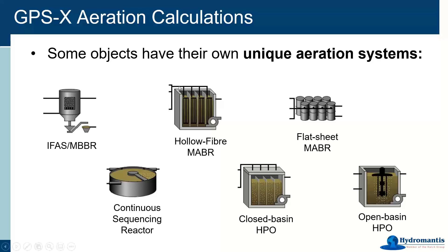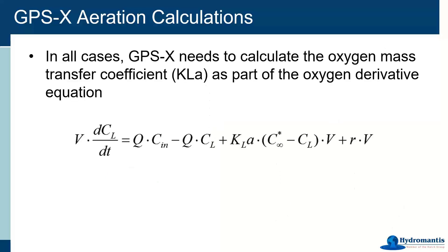Some of the other objects that you'll find in the GPSX unit process table — on the left-hand side of your drawing board — have their own unique aeration systems, because that is reflective of that particular technology. Here are examples of a few: the aerated struvite object, MABRs, the continuous sequencing reactor, and our two high-purity oxygen systems, which show their own special aeration model because they are using high-purity pure oxygen in that case.